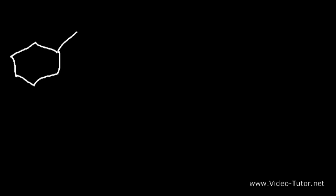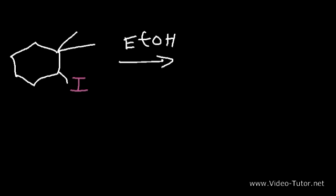Let's try another solvolysis reaction. This time we have a cyclohexane ring with two methyl groups on the outside and we're going to use iodine as the leaving group. We'll use EtOH — ethanol, which is CH3CH2OH. Ethanol will react very similarly to methanol. This is another SN1 solvolysis reaction where the solvent behaves as a nucleophile. Feel free to pause the video and predict the major product of this reaction and propose a mechanism for it.